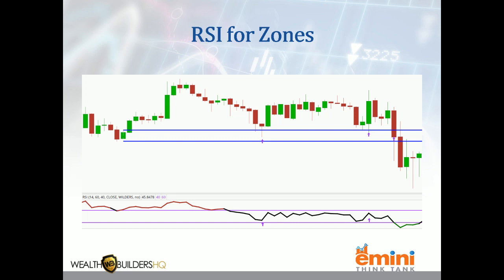Going out to some charts, we can take a look at how this works. It doesn't matter the security or the timeframe — it works on every timeframe and every security. Looking at this, as prices came down, we had a buy zone here on the left: drop, base, rally. Prices as it came in were above 40 — you can see my 40 and my 60 line, 14 periods, 60, 40. We were able to bounce and hold that zone and get a move to the upside. When we came back down again a second time, the RSI was well above 40, meaning the zone should hold — and sure enough it did. We got a little bounce there, actually a little faster than previously.